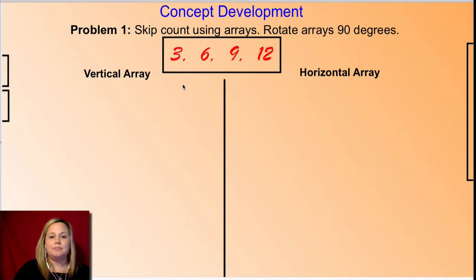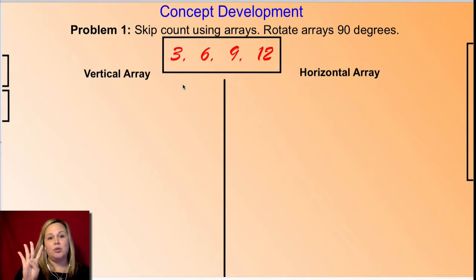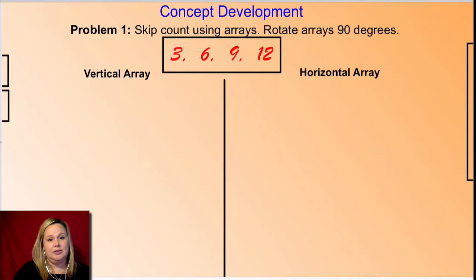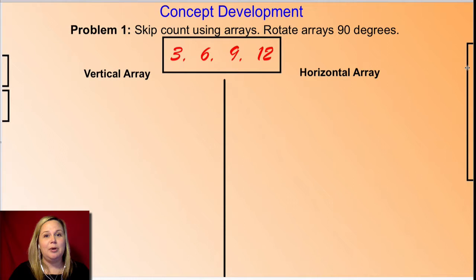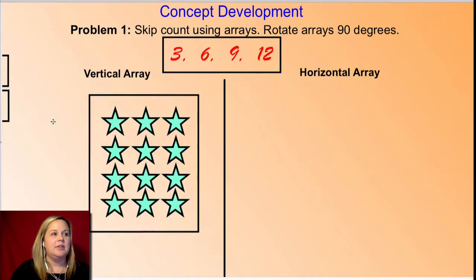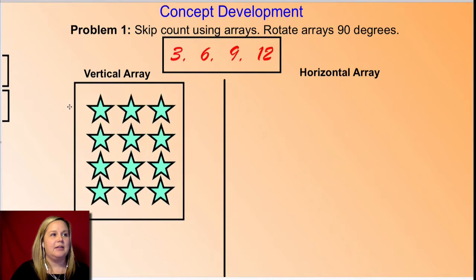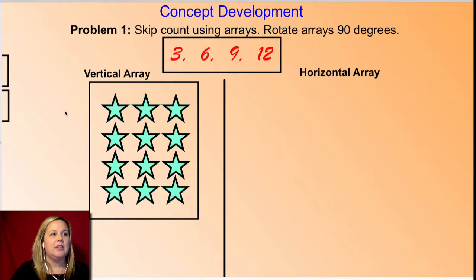Now I want you to draw an array that matches that skip counting. The array should match how you count the number of rows to represent the number of groups. You counted four times and there were three in each skip count, so go ahead and draw your array. If you haven't finished, click pause, then resume when you're ready.